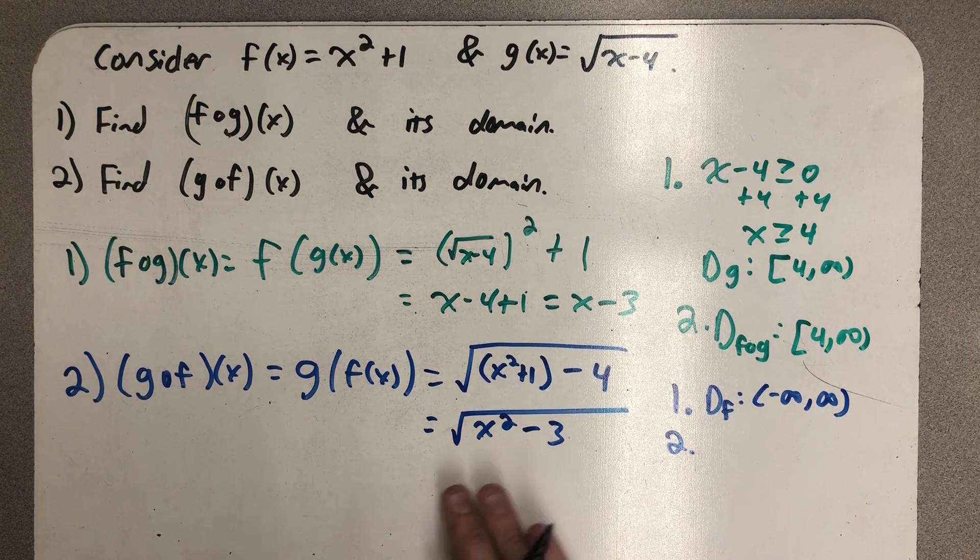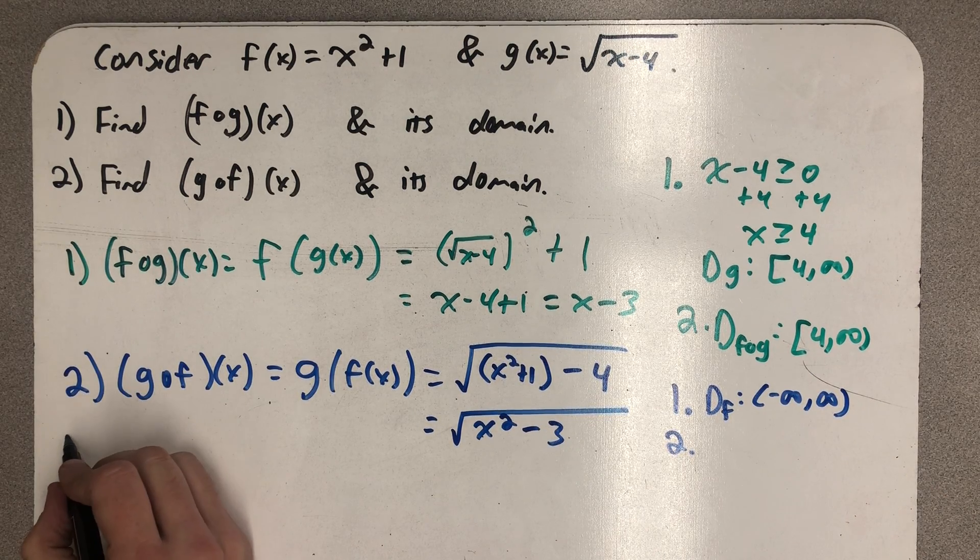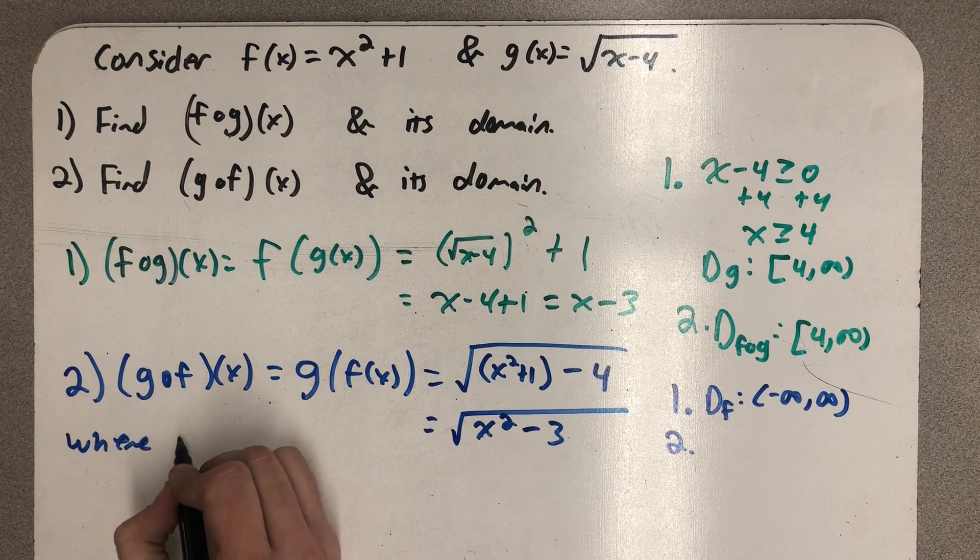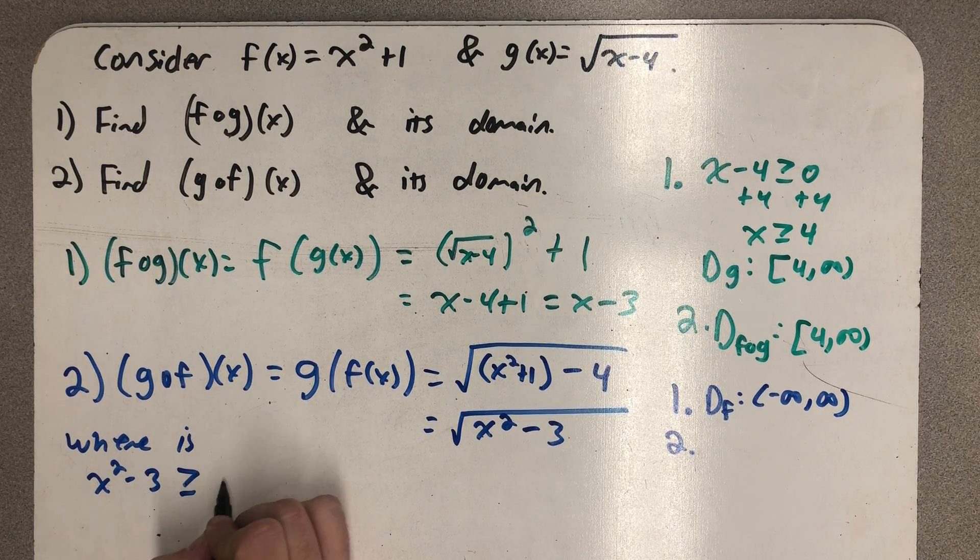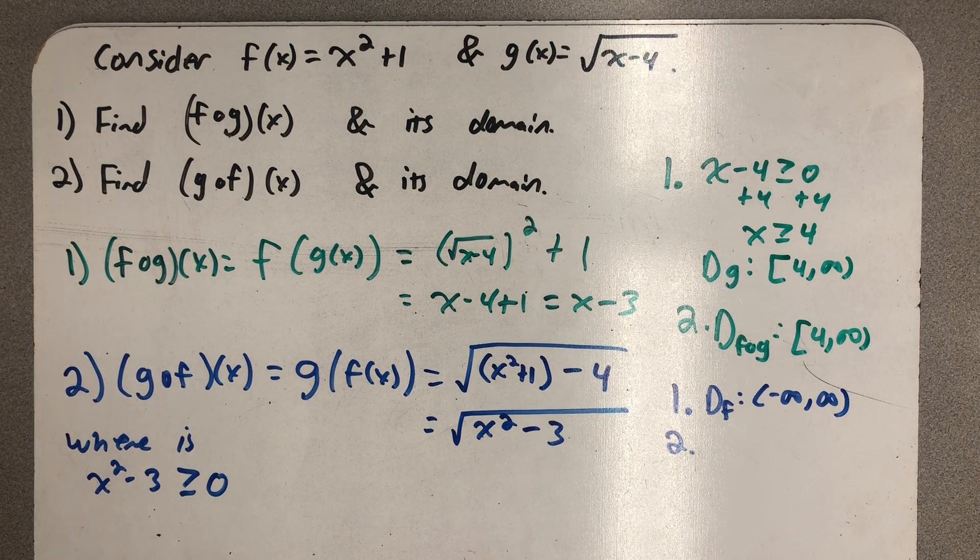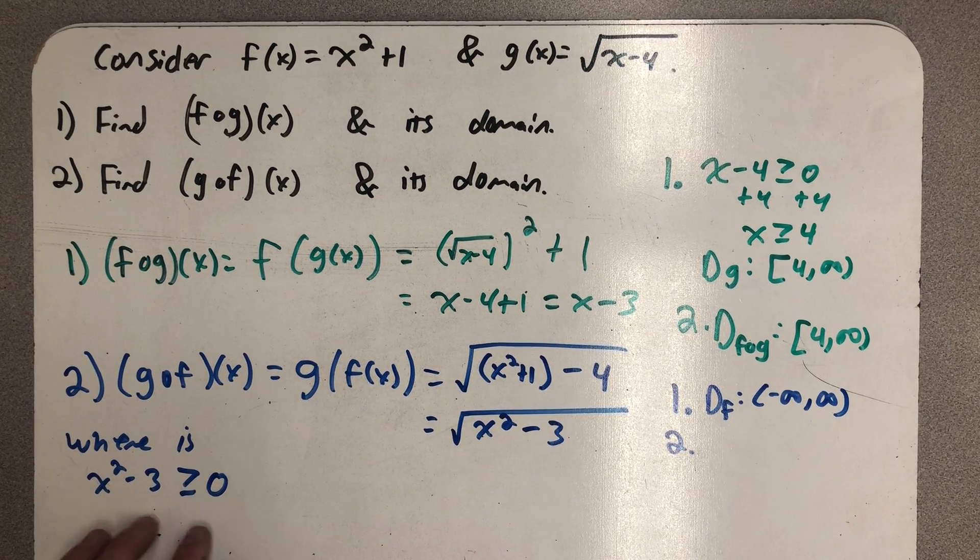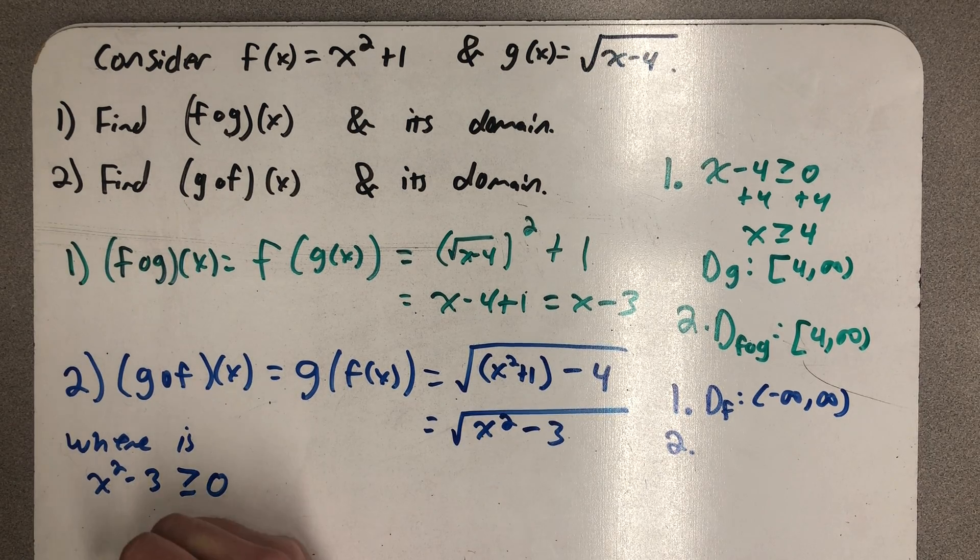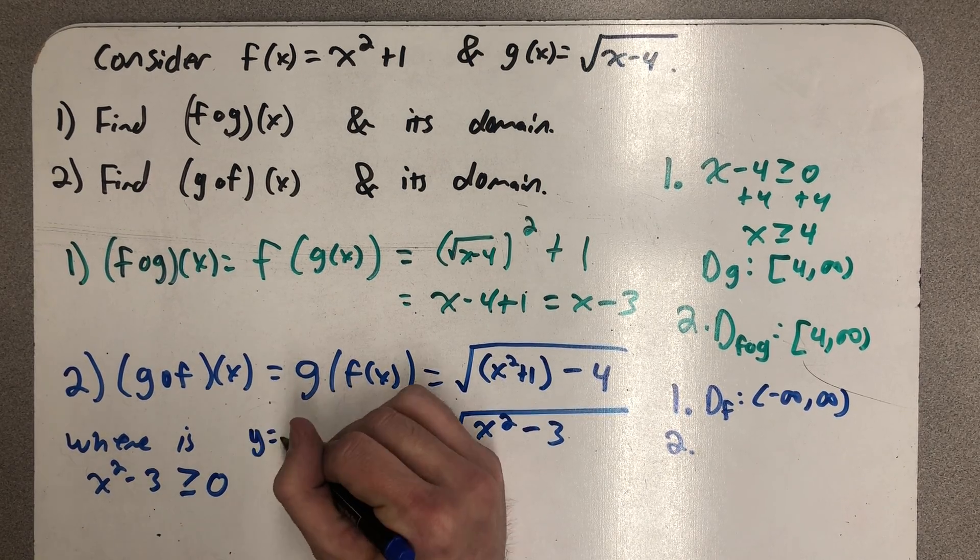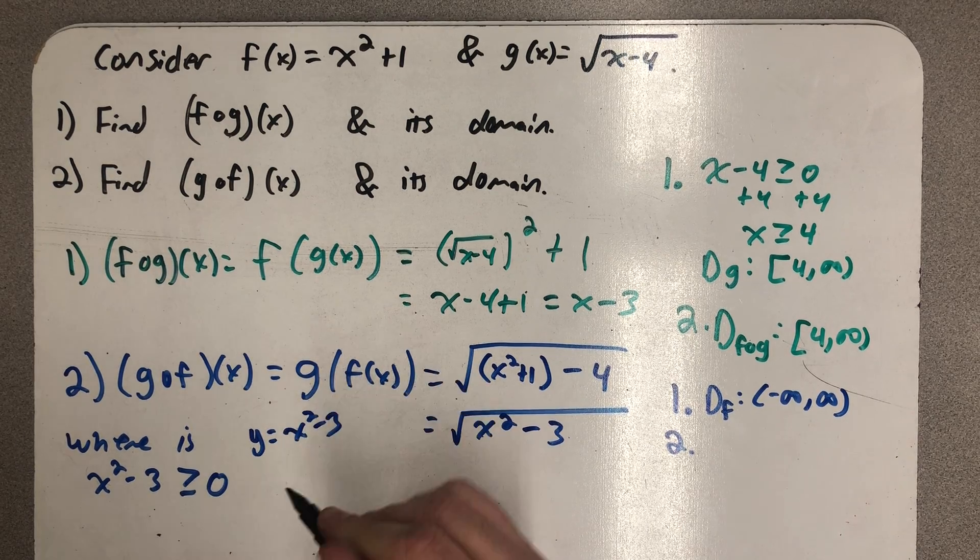But now I do have an interesting new formula. And the question is, where is x squared minus 3 greater than or equal to 0? And there's a couple of different ways of dealing with an inequality like this.